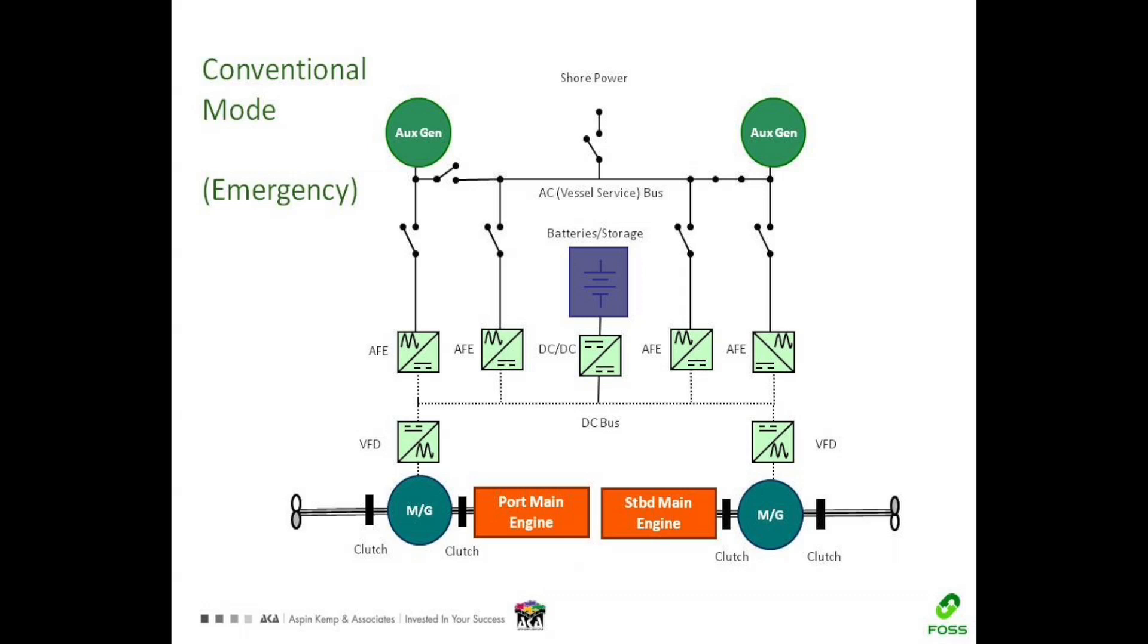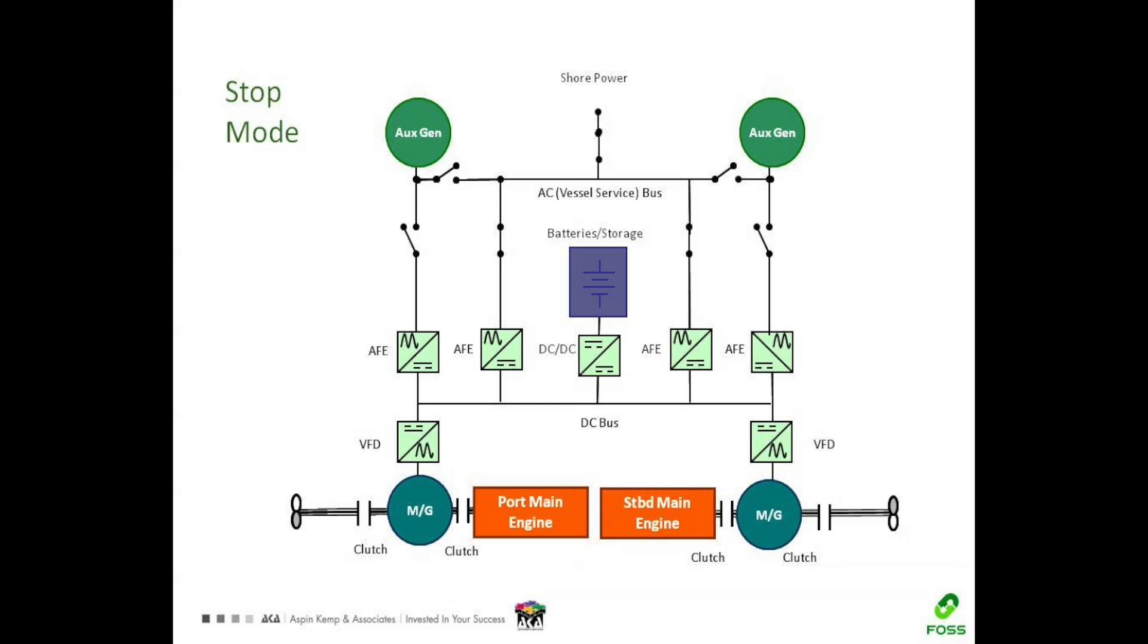So in that mode, the propellers get power directly from the main diesel, and one of the auxiliary generators will be providing power to the AC bus as it would on a conventional vessel. Stop mode, that's when the vessel might be at dock tied up at its normal berth or at another dock in the harbor. In that mode, if it's at its own dock, then it might be on shore power. In this mode, the main difference of operation is that the propulsion units are disabled. So you get power from shore power, come through and supply the AC bus, through one of the AFEs to the DC bus, and then you can charge batteries.